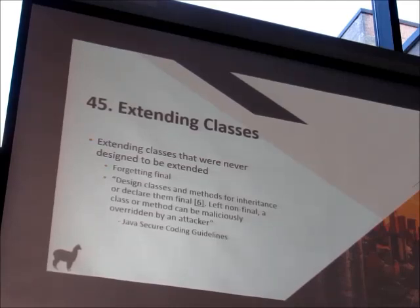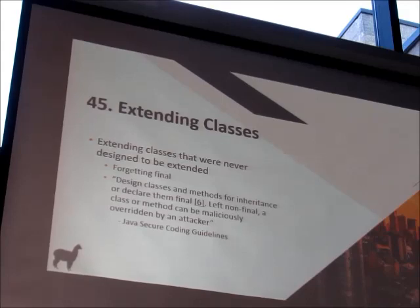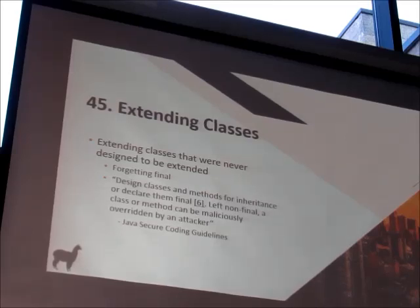The Java secure coding guidelines say: design classes and methods for inheritance or declare them final. If you leave them as non-final, a class or method can be maliciously overwritten by an attacker. Even though everyone knows that, we're still lazy or forget about it with deadlines. I would say easily 99% of all classes are not declared as final, even though they're not intended to be derived. In Kotlin, everything is final by default. If you actually want something to be extensible, you have to mark it as open — you have to go out of your way to do that, meaning you've thought about those scenarios.